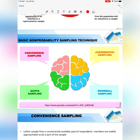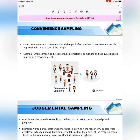Here are the basic non-probability sampling techniques. Under non-probability, we have 4 types of sampling. The first one is convenience sampling. The second is quota sampling. The third is judgmental sampling. And the fourth is snowball sampling.